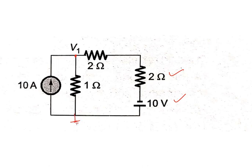Now we can apply nodal analysis. You can see the current is entering here, so current will leave here and another current will leave here. So we write: 10 = V1 / 1 plus the current through the other branch. The voltage in that branch is V1 + 10, divided by the total resistance of 4 ohms.